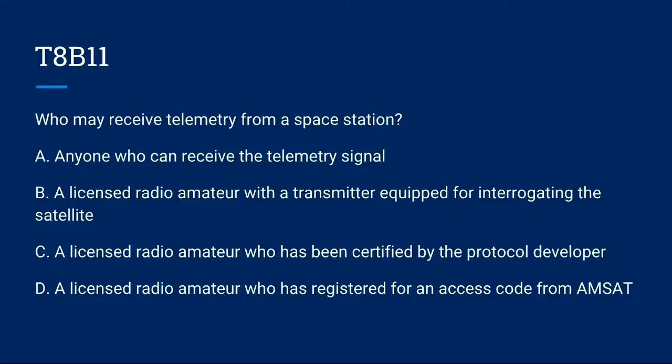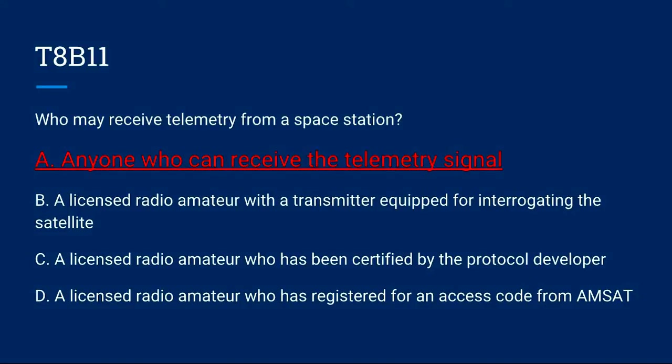T8B11: Who may receive telemetry from a space station? A. Anyone who can receive the telemetry signal. B. A licensed radio amateur with a transmitter equipped for interrogating the satellite. C. A licensed radio amateur who has been certified by the protocol developer. Or D. A licensed radio amateur who has been registered for an access code with AMSAT. The correct answer is A: anyone who can receive the telemetry signal.